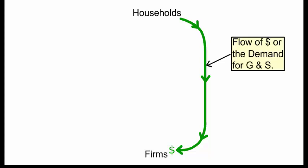Let's say the households have money or income to purchase goods and services from the firms. So they take their money and they purchase the goods and services from the firms. We call this the flow of money or the demand for the goods and services.